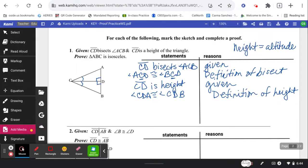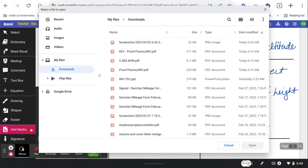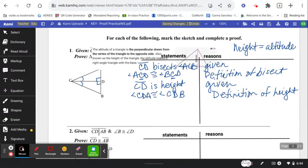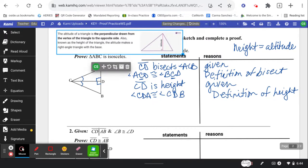I went ahead and paused it so I could go grab this little definition here for you. So the altitude of a triangle is the perpendicular drawn from the vertex to the opposite side. Also known as the height of a triangle. So I threw that little definition in there for you. So now we don't have any other givens.